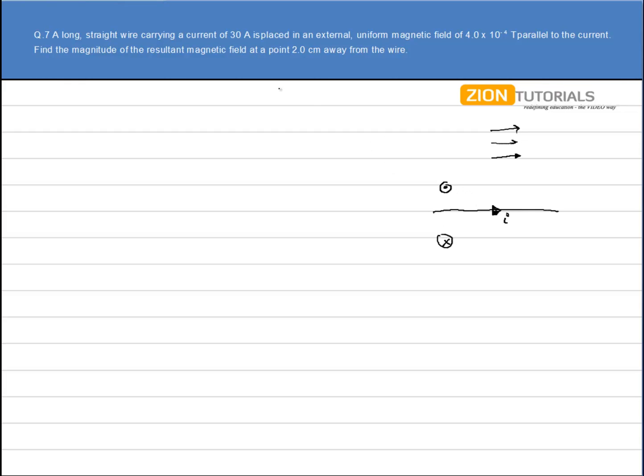We have to calculate the net magnetic field. First of all calculate the magnetic field due to this straight current carrying conductor. This is given by μ₀I/2πr because this is the formula that we use to calculate a magnetic field at a distance r from a straight current carrying conductor.